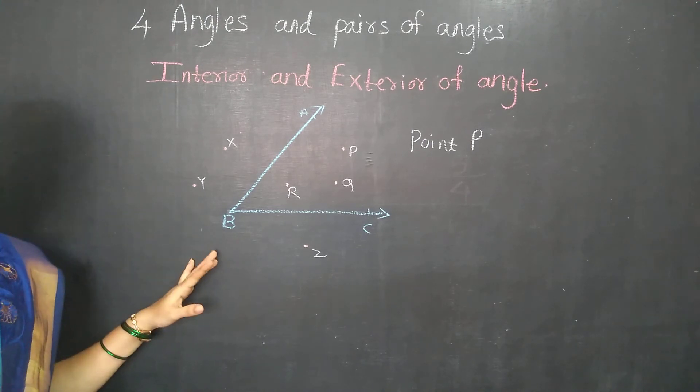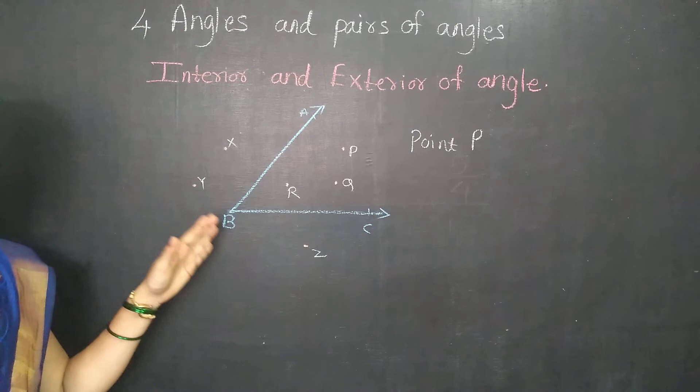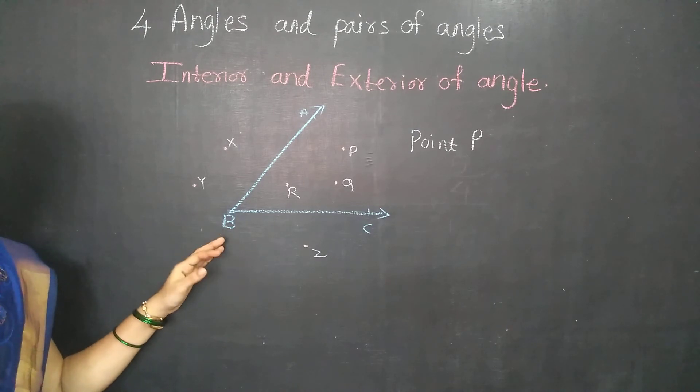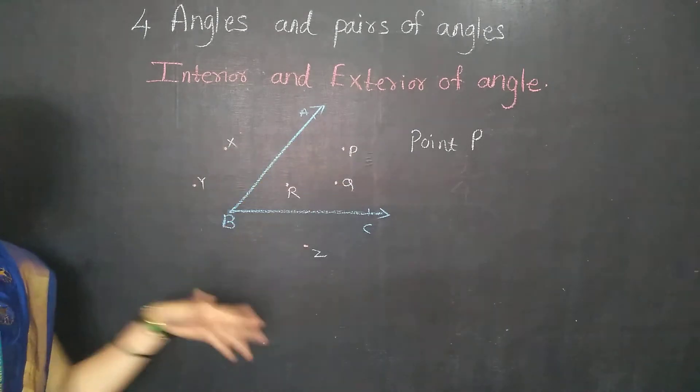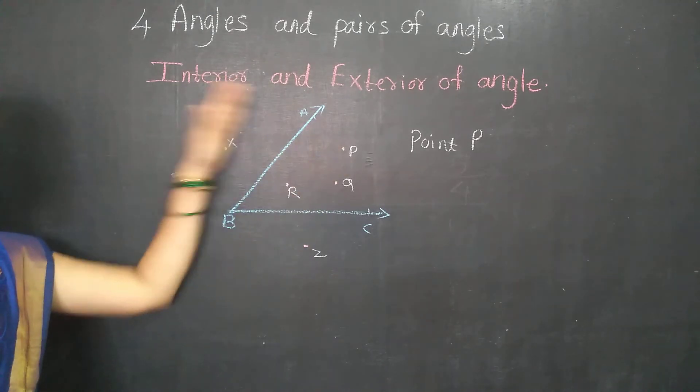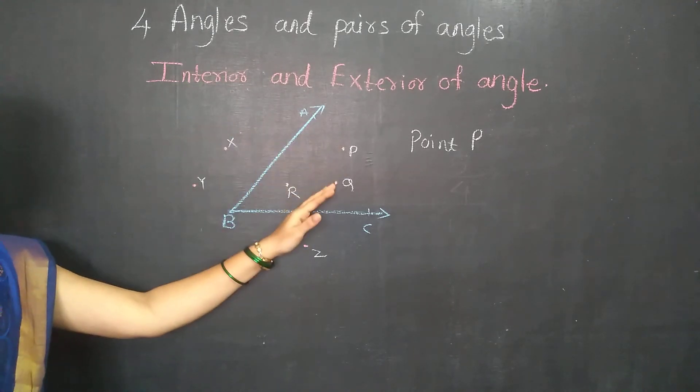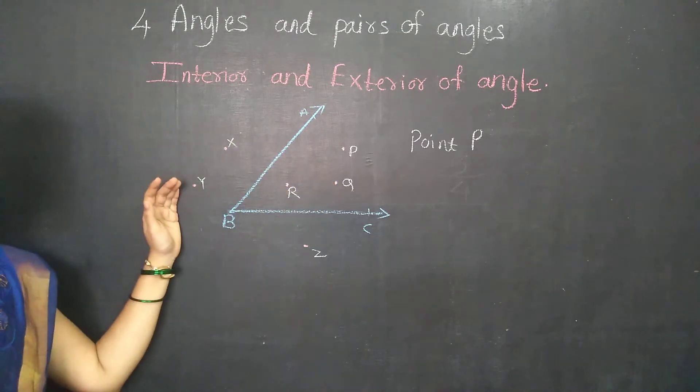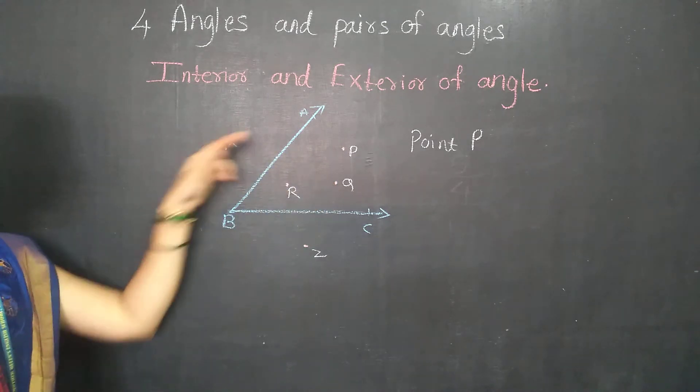As simple as that. In your practice set number 15, they have given a table, and in that table they told you to write the answer. Now, this is about the interior and the exterior. It is in the angle, outside the angle and some points are on the angle.